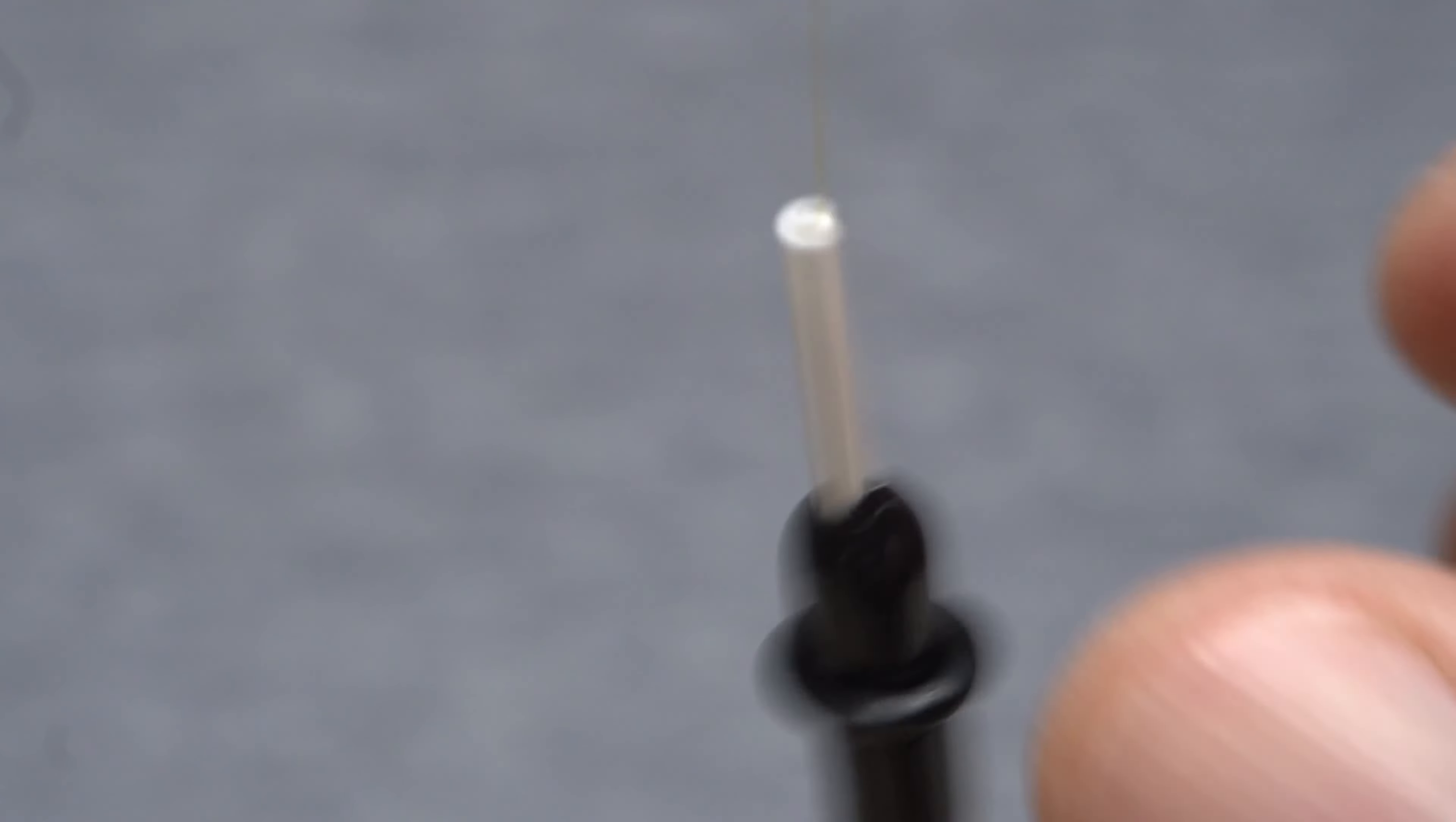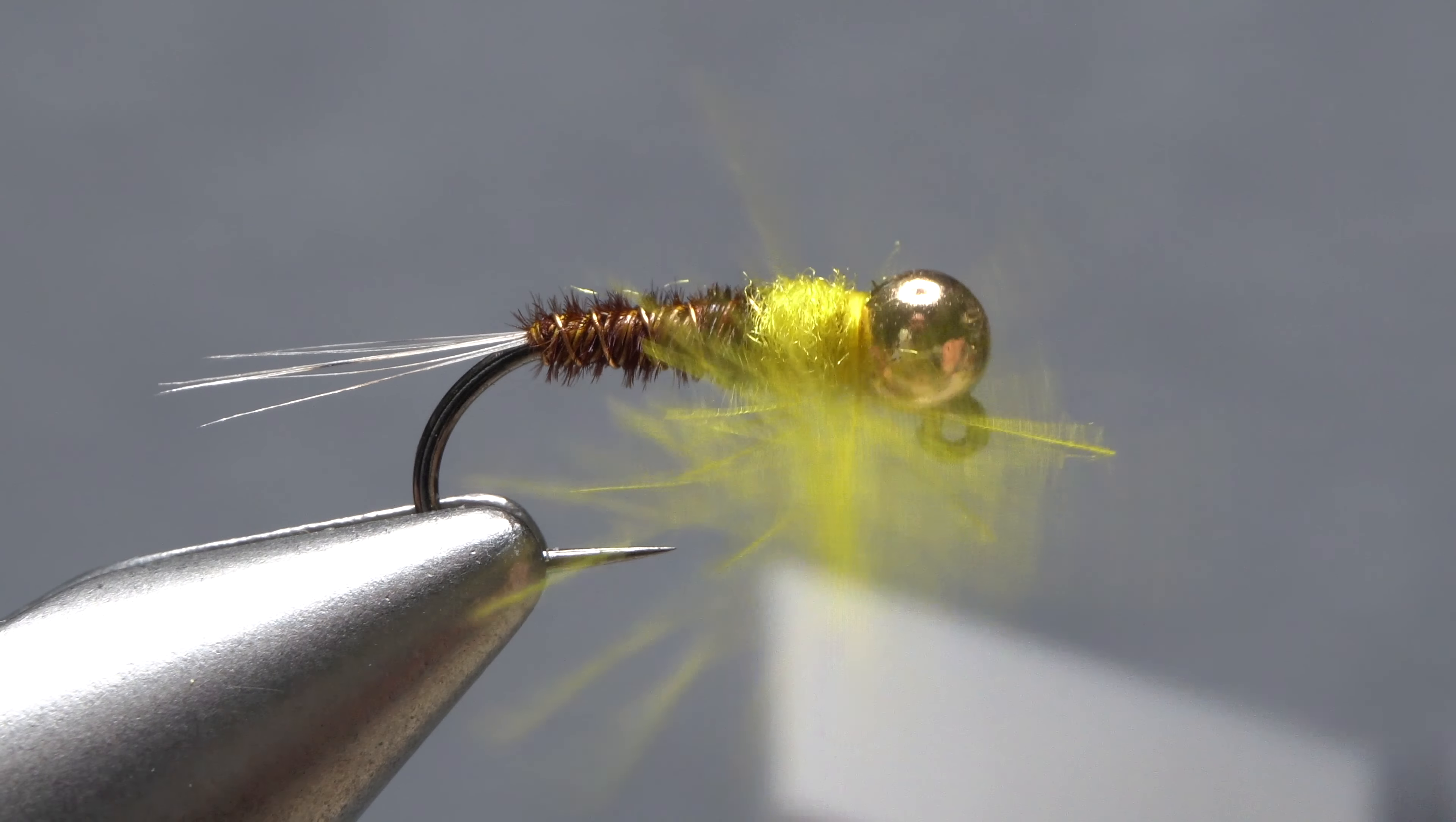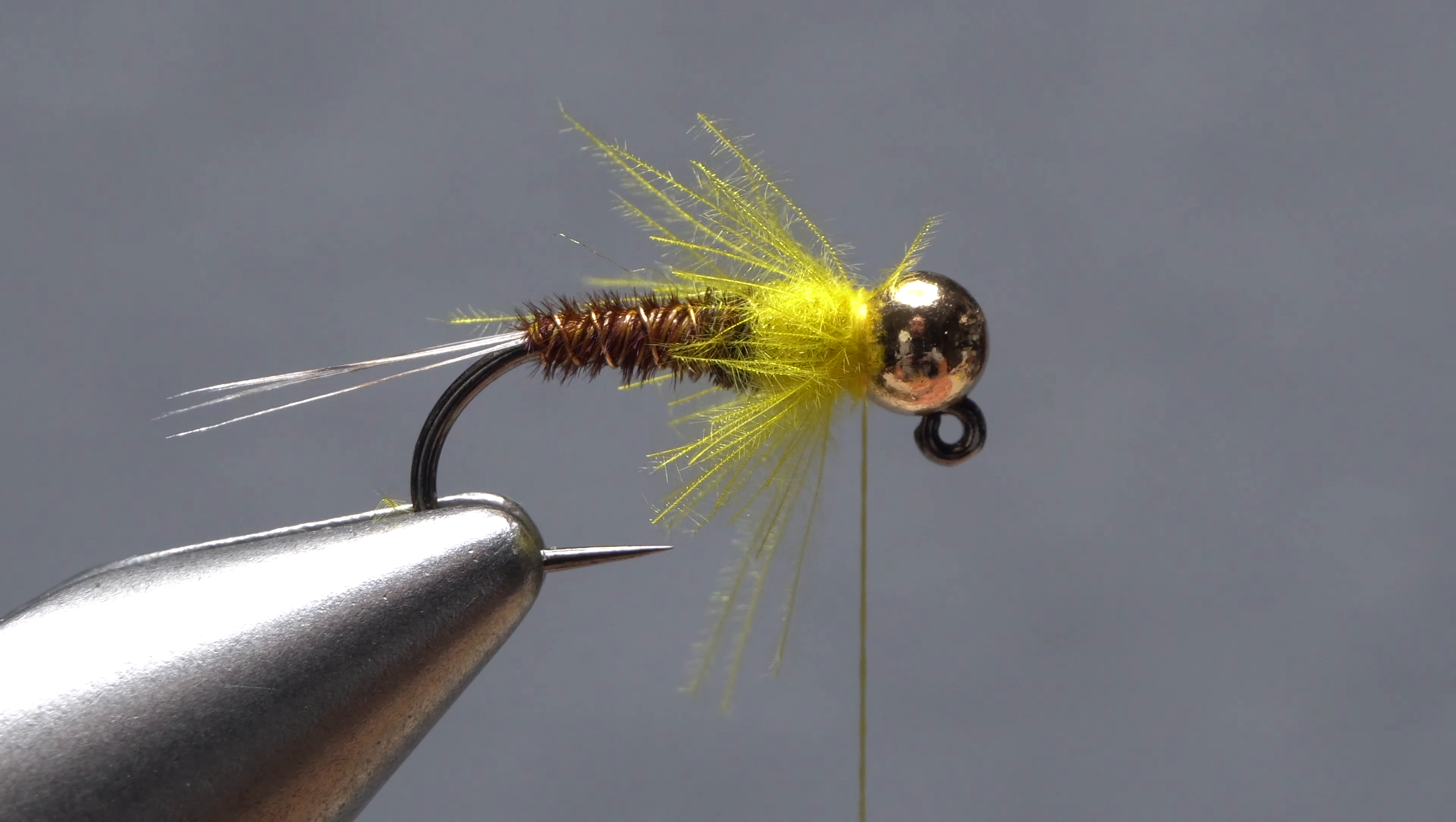Give your bobbin a clockwise spin to cord up the thread and trap the fibers in the process. Take wraps with your tying thread, preening the CDC fibers rearward as you go. Keep wrapping until you reach bare thread and your split thread CDC collar is complete.